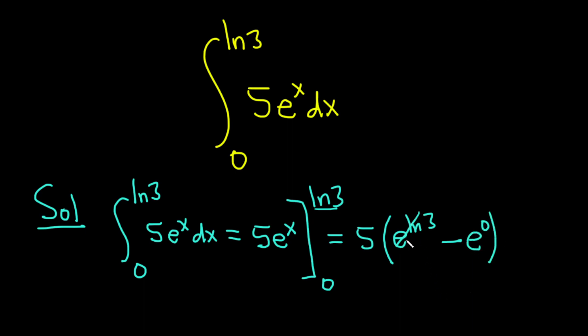These cancel, the e and the ln, so you just get 5, parentheses, 3 minus, e to the 0 is 1. So you just get 5 times 2, which is 10. So the answer is actually just 10. So this is equal to 10.